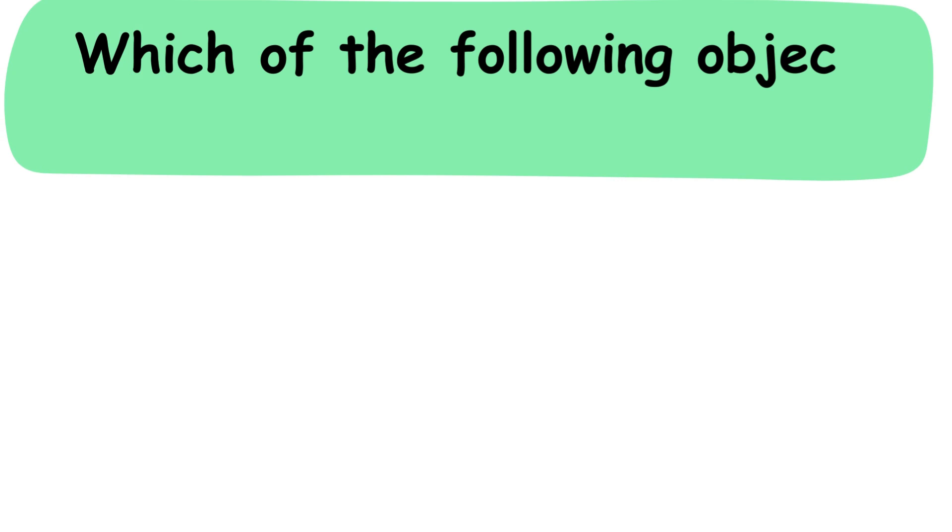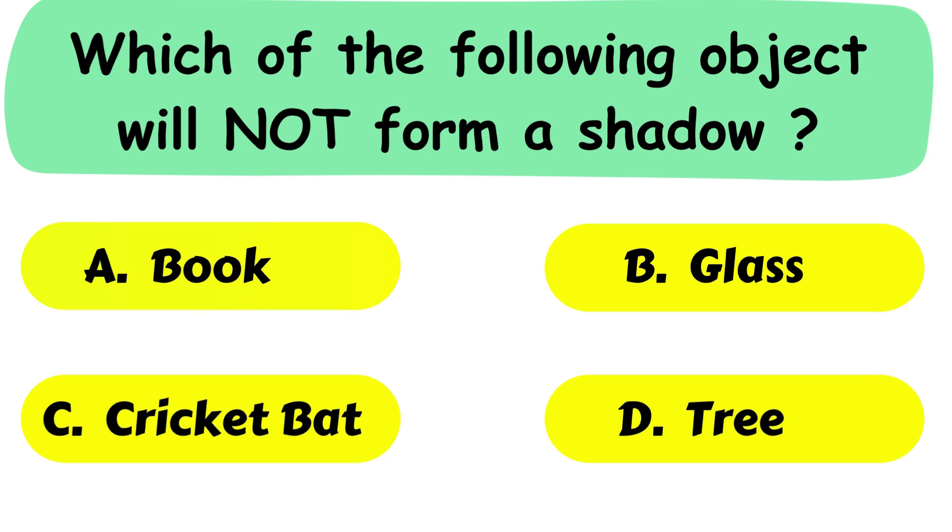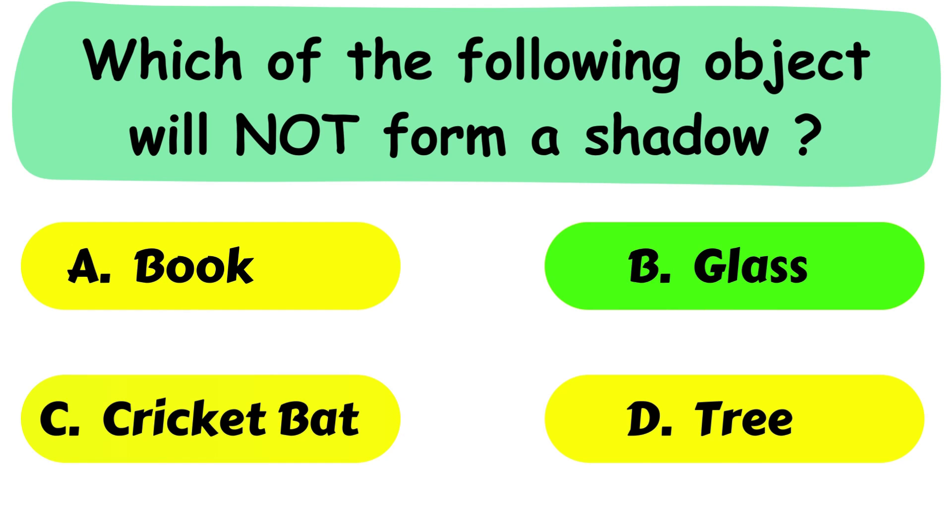Question No. 32. Which of the following object will not form a shadow? A. Book. B. Glass. C. Cricket bat or D. Tree. The correct answer is option B. Glass.